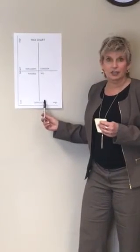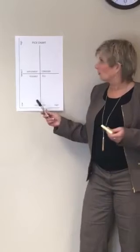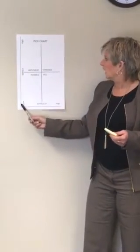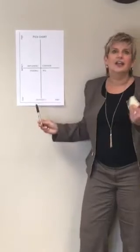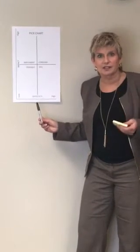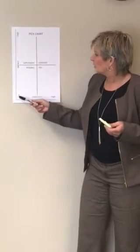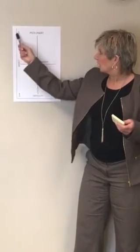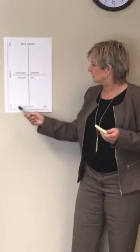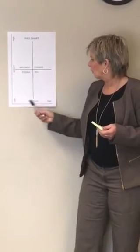You take a piece of large poster paper and make it into a quadrant. On your vertical axis you have the impact on what you're trying to improve — your key process indicators, your efficiency — either low or high. And then you also have the difficulty of implementation, low or high.